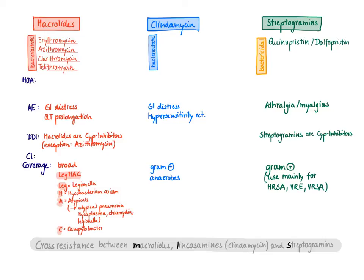The last protein synthesis inhibitor class are the streptogramins, with two representatives: quinupristin and dalfopristin. We always give them together, and together they have a synergistic effect — they are even bactericidal as a combination. This is a second example of a protein synthesis inhibitor class that acts bactericidal rather than bacteriostatic. Special side effects are arthralgias and myalgias. These drugs are also CYP inhibitors and only cover gram-positives, as they are bulky molecules that cannot pass through the porin channels of gram-negative bacteria. Because they are newer agents, we reserve them for multidrug-resistant strains like MRSA, VRE, and VRSA.